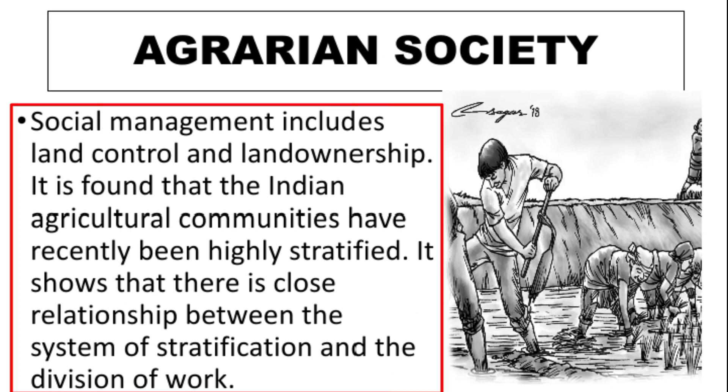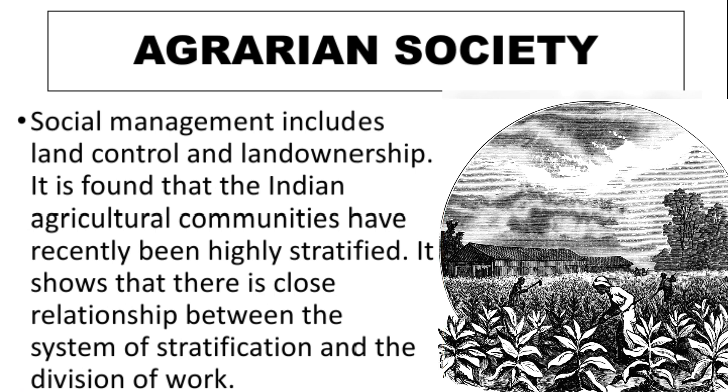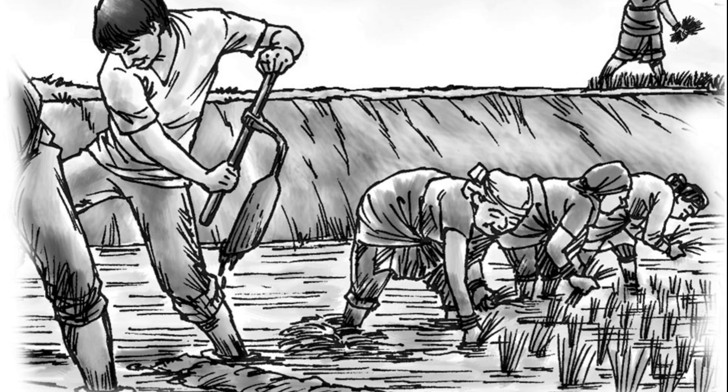Land ownership is observed in Indian agricultural communities and stratified societies in the region. Through census data, we can figure out regional patterns — for example, in Punjab and Haryana — and observe the proportion of agriculture and land distribution in the region.